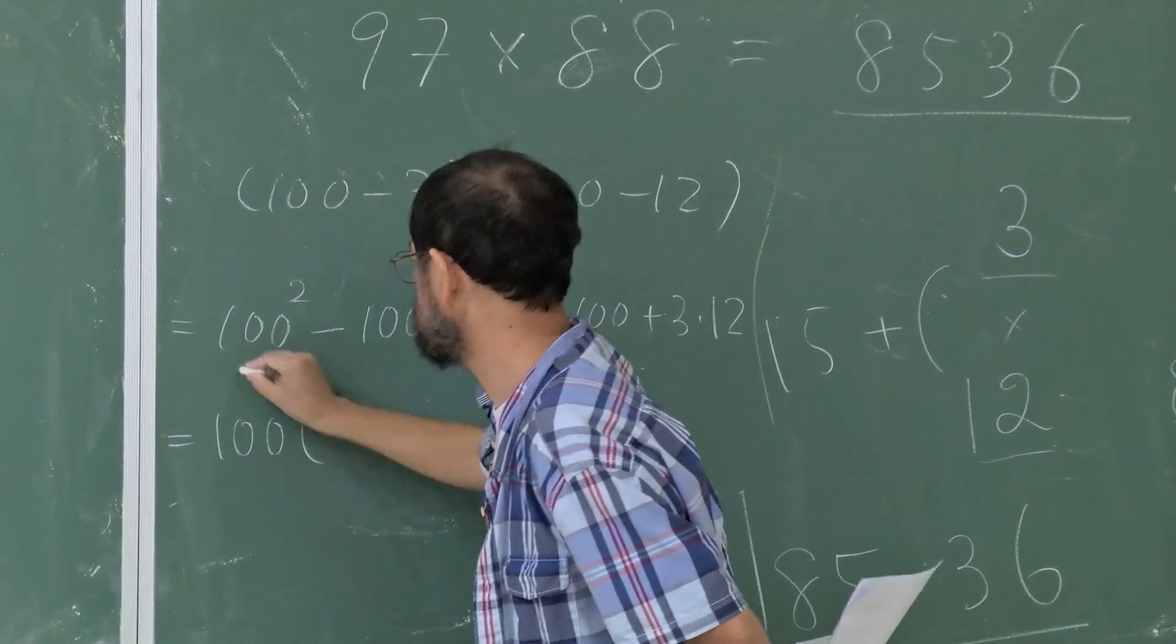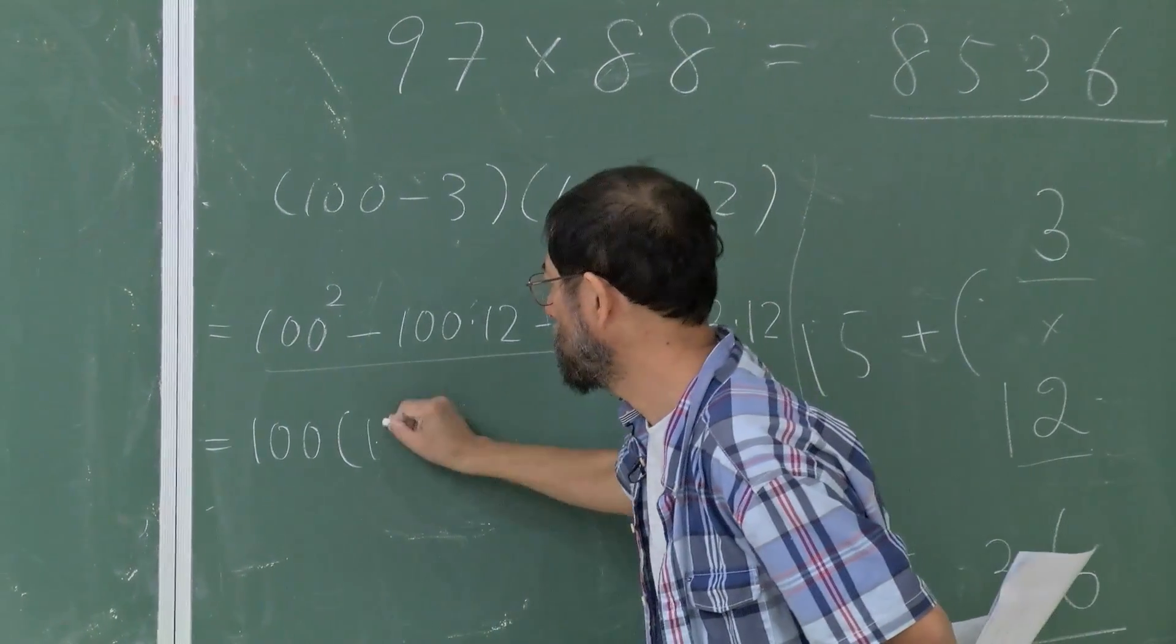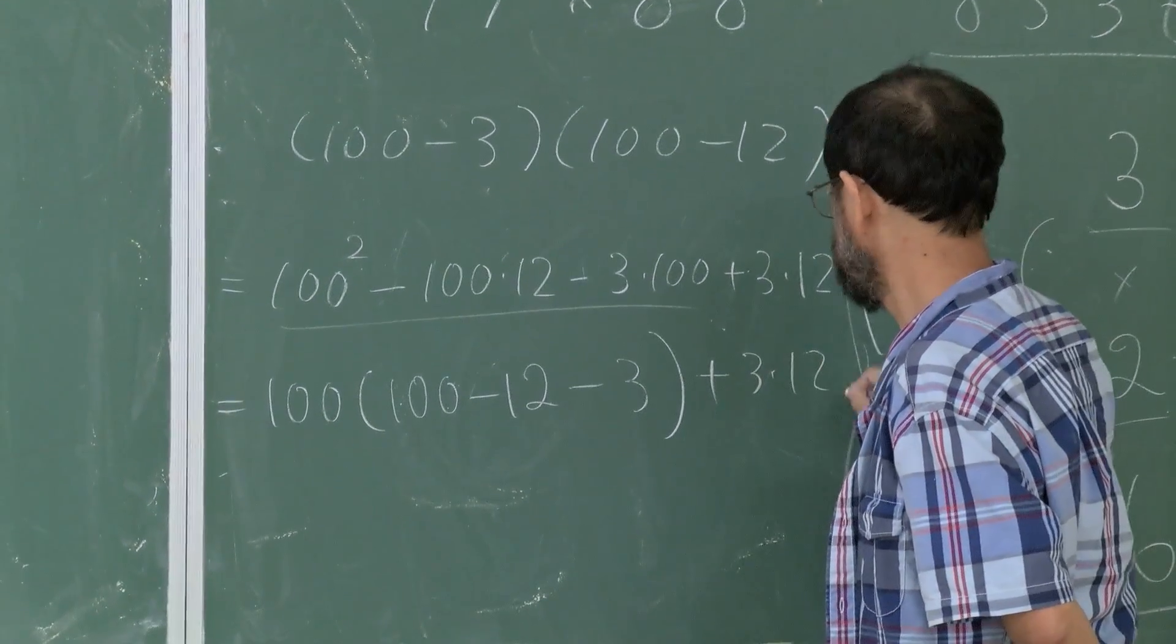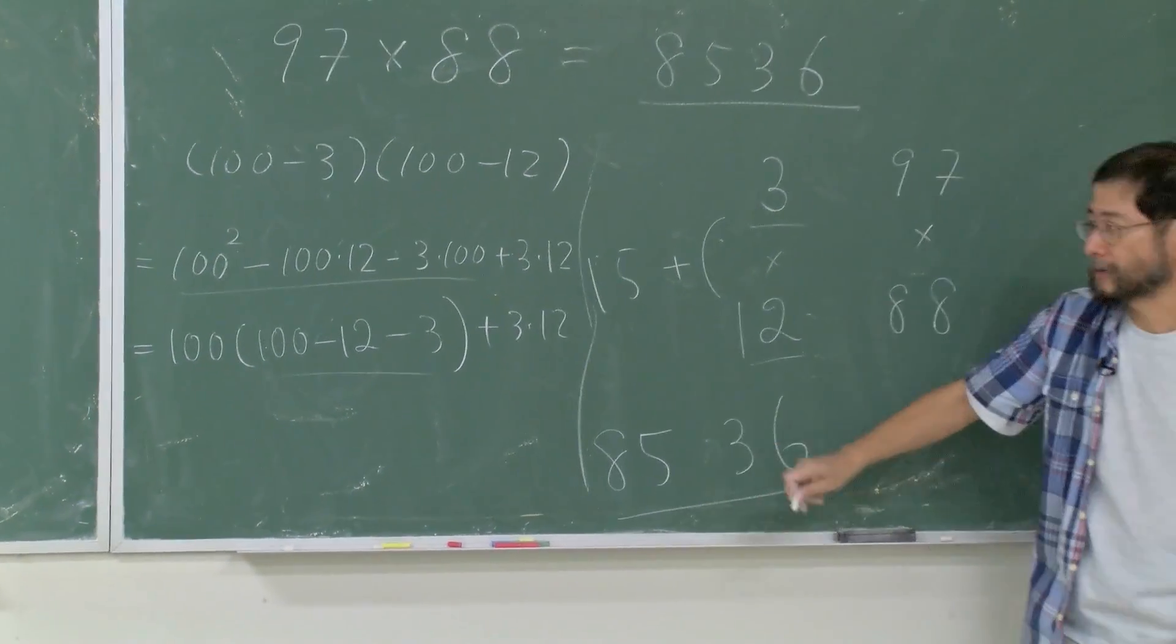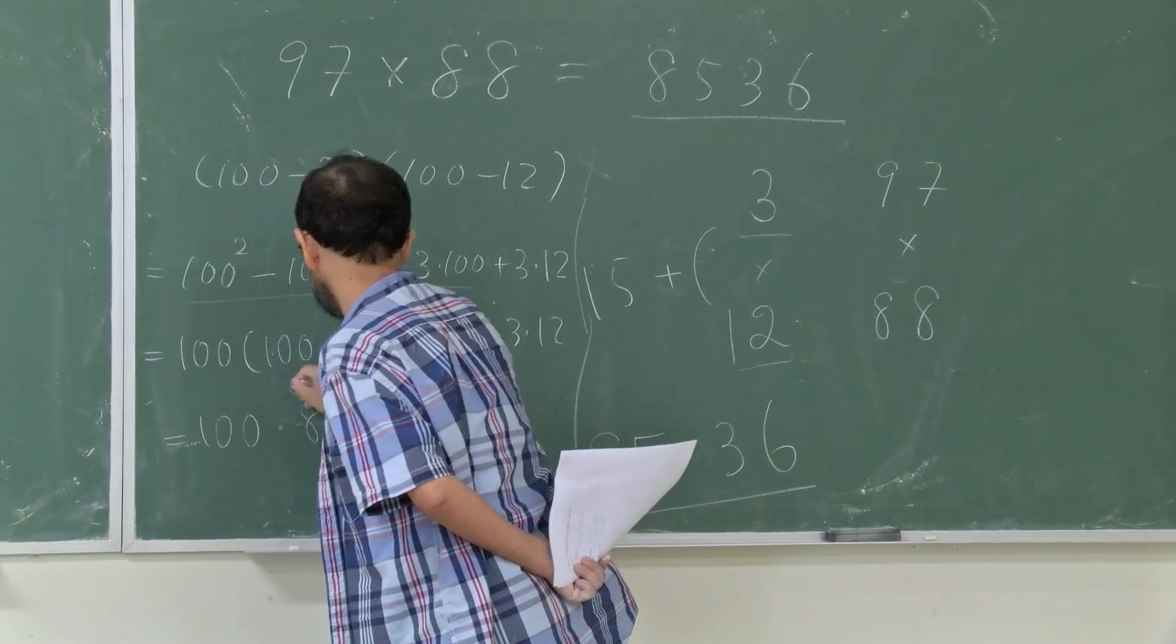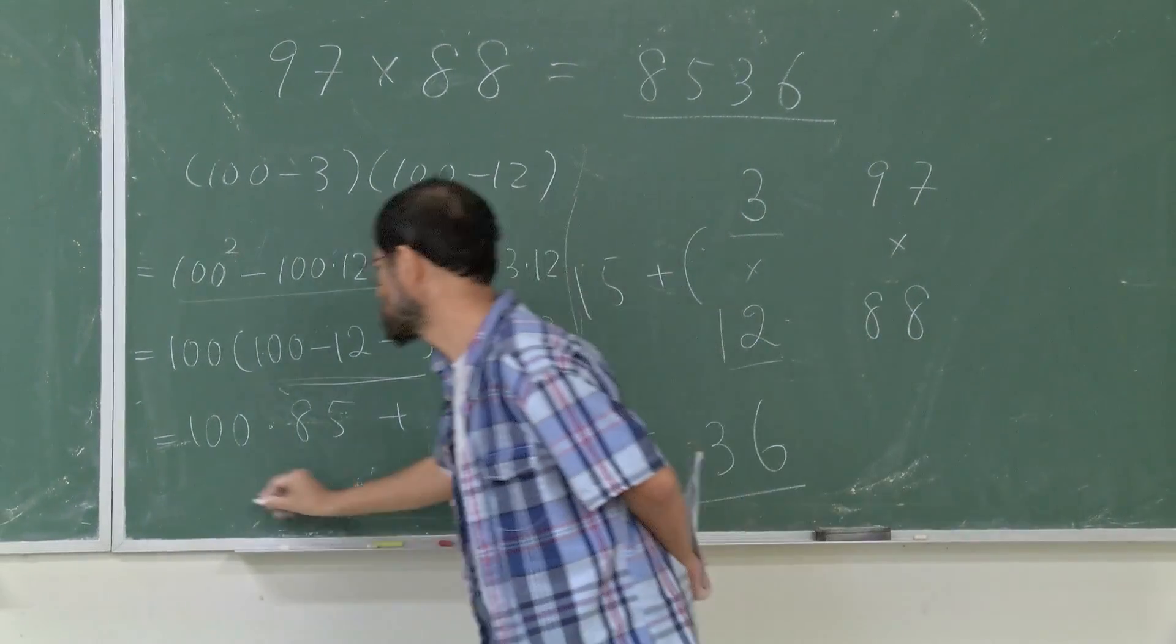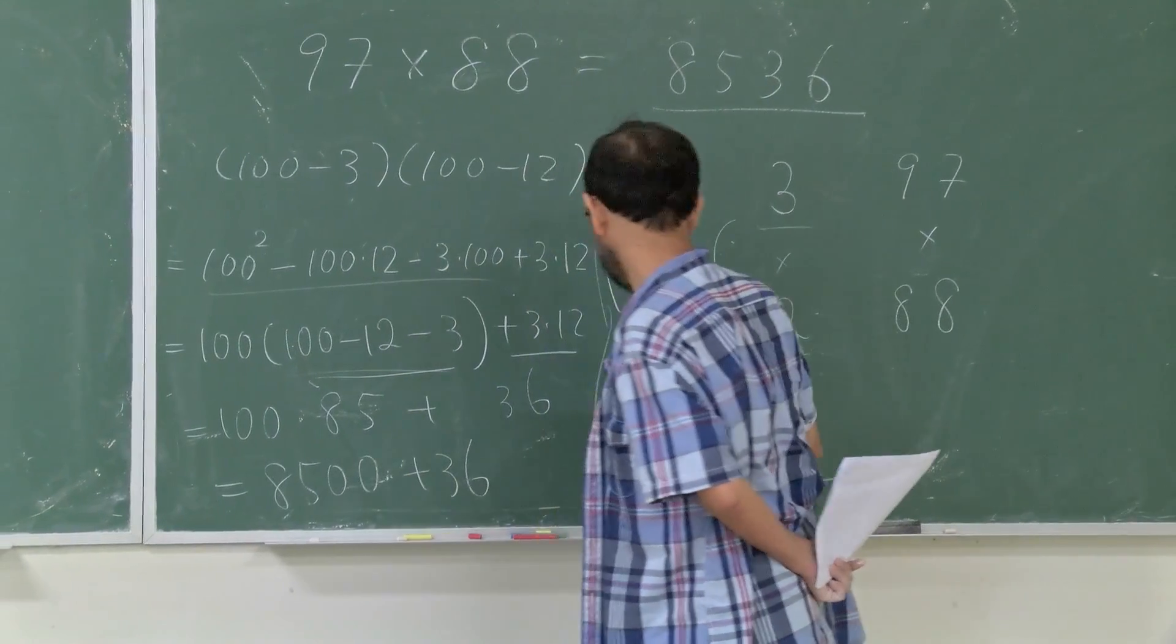I can now factor. This is factored by 100, so I have 100 times (100 minus 12 minus 3) plus 3 times 12. Then this is 100 times (100 minus 15), which I did here. So this is 100 times 15 is 85. And then 3 times 12 is 36. So I have 8500 and 36.